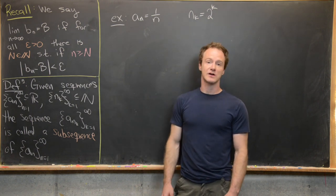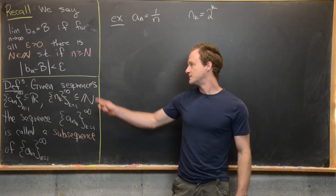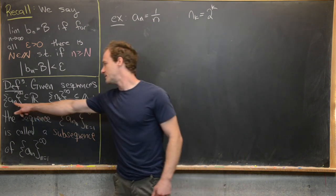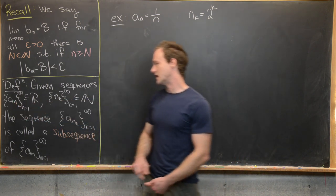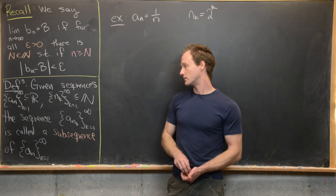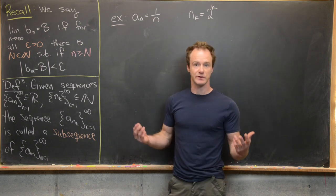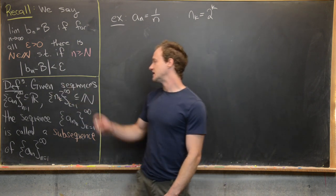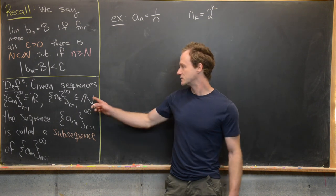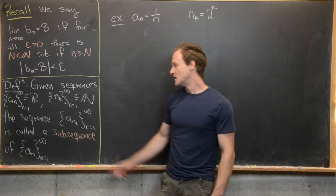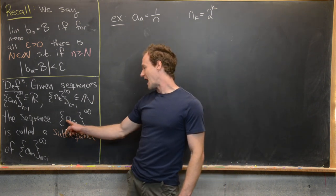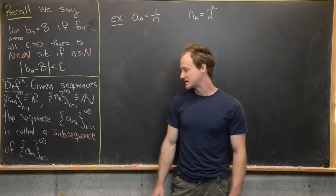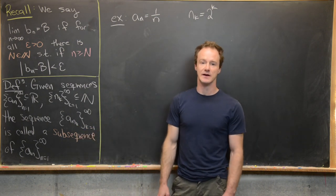Now we want to look at the notion of a subsequence. So given two sequences — one of them is a_n, a sequence of real numbers, since we're doing real analysis, and the other one is a sequence n_k of natural numbers — the sequence a_{n_k} is called a subsequence of a_n.